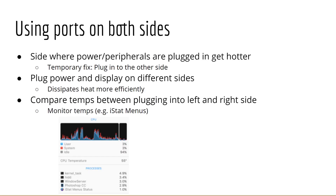My next suggestion is to use ports on both sides of the laptop. If you have both your MacBook charger and your hub plugged into the same side, heat will be concentrated in that area. Due to the laptop's design, the side where peripherals and power are plugged in tends to get hotter. A temporary fix I found was to unplug and plug into the other side when experiencing throttling — though this is clearly not a permanent fix. If you are able to, I recommend plugging the power and display on different sides of the laptop, as it helps heat dissipate more efficiently.